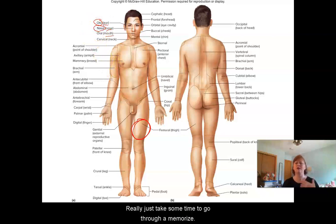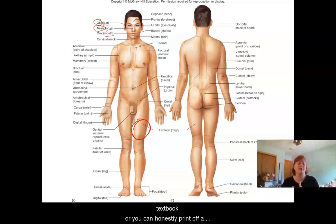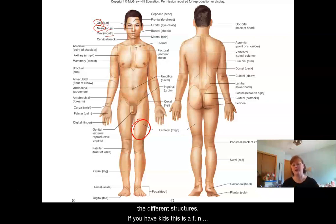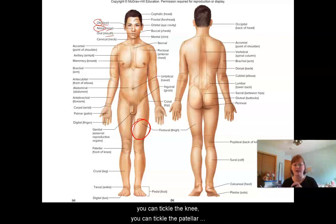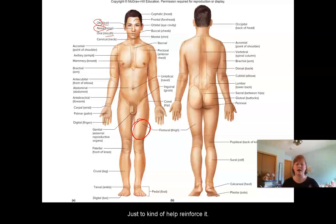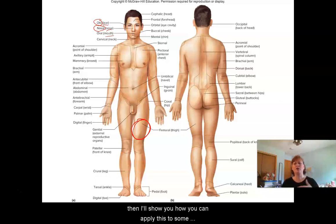Just take some time to go through and memorize. You can use the picture in your textbook, or you can print off a picture of anybody you want to look at and identify those different structures. If you have kids, this is a fun game — you can have tickle fights with them and identify the different parts. When you're tickling their knee, you're tickling the patellar region, and so on. So let's do a quick rundown of the different terms and then I'll show you how you can apply this to some pictures of real people.